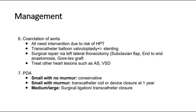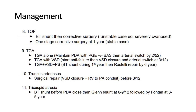For PDA (patent ductus arteriosus), if it is small with no murmur heard, then conservative treatment. If small but there is a murmur, then at 1 year old we can do transcatheter coil or device closure. For large defects, surgical ligation or transcatheter closure is needed. For tetralogy of Fallot, we can do a BT shunt (Blalock-Taussig shunt) and then corrective surgery.